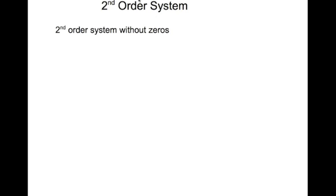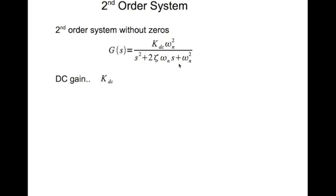Now we'll look at second-order systems. Second-order systems are a little bit more complicated than first-order systems, and we'll have to look at various situations depending on something called damping. The canonical second-order system without zeros has transfer function g(s) = k_dc times ω_n² divided by (s² + 2ζω_n·s + ω_n²). This is the characteristic equation. The DC gain is k_dc — as s tends to zero, s² and s terms vanish and ω_n² cancels, leaving k_dc.